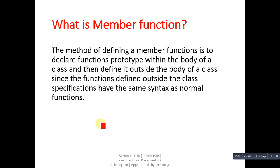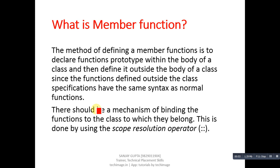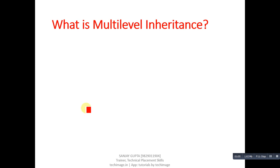Next question: what is a member function? The method of defining a member function is to declare the function prototype within the body of a class and then define it outside the body of the class. Since functions defined outside the class specification have the same syntax as normal functions, there should be a mechanism of binding the functions to the class to which they belong. This is done by using the scope resolution operator.